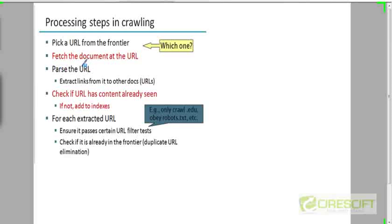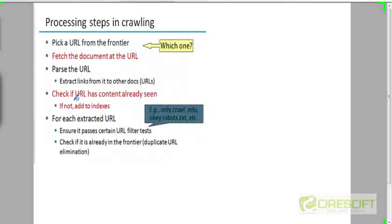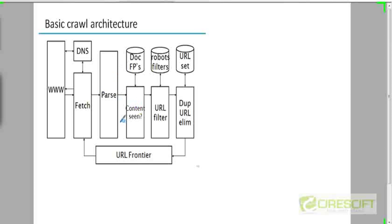Then it will parse the URL — the next step is parsing the fetched document and extracting the links to other documents. It also extracts the text that will go into the indexing pipeline. Before sending text to the indexing pipeline or extracting links, it has to ensure that this particular document has not been seen before.